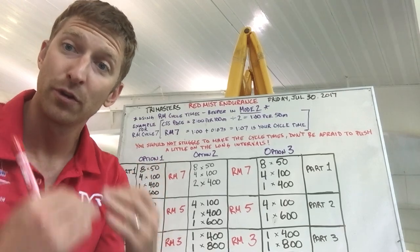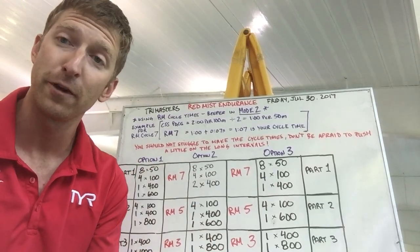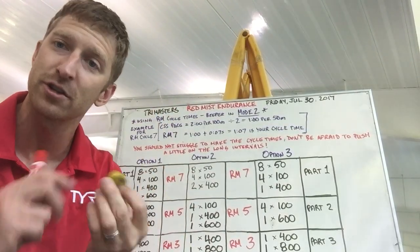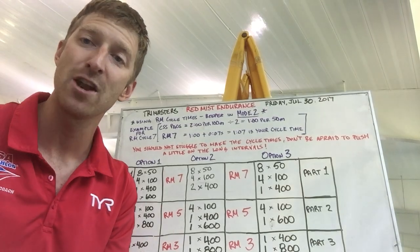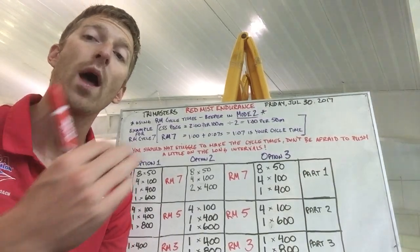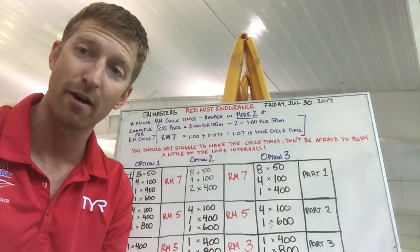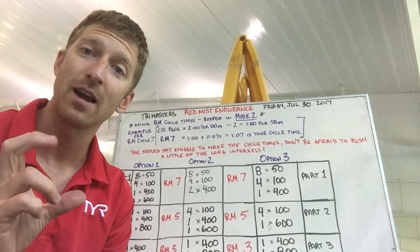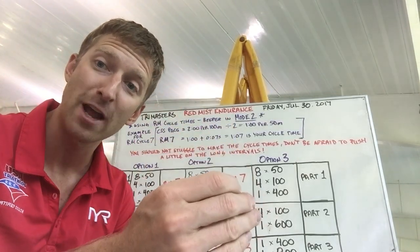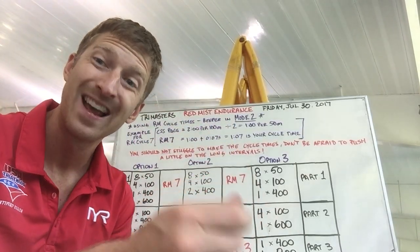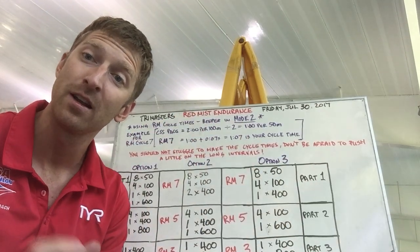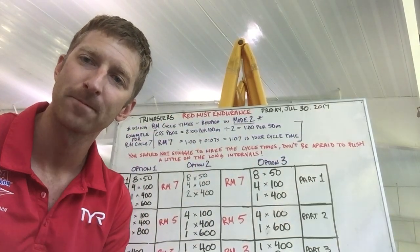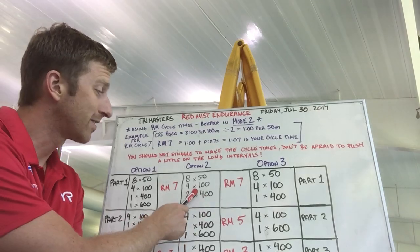Put this underneath your swim cap — it's now going to beep every one minute and seven seconds. For the first part of the workout we have eight by 50 on RM cycle seven. You set off on your very first 50, re-sync the button as you go, and at the end of 50 meters you'll be well ahead of the beeper. That amount of time between when you finish the 50 meters and when you hear the beep again is the amount of rest you get.